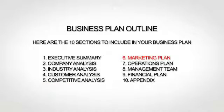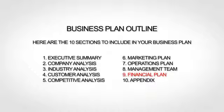The sixth section is your marketing plan, where you lay out your marketing strategy. The seventh section is your operations plan, where you explain how you actually run or will run your business. The next section, the management team, is where you provide bios of your team. The ninth section is your financial plan, where you give financial forecasts. And finally, the tenth and last section is your appendix, where you provide any additional supporting information.